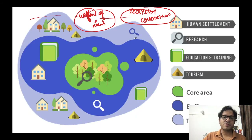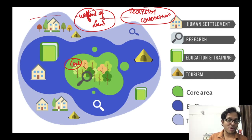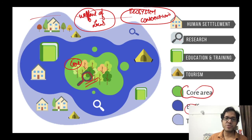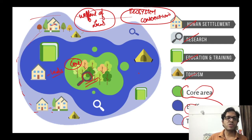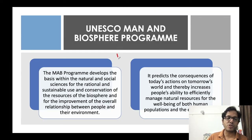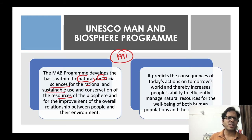Biosphere reserves mein teen areas hote hain. Pehla core area - jahaan pe koi bhi activity prevented hai, only research is allowed. Us ke bahar buffer area hai, jis mein all four activities are allowed: human settlement, research, education and training, and tourism. Human settlement matlab locals ka - local tribes. Aur transitional area mein bahut zyada human settlements hain. Man and Biosphere program 1971, initiated by UNESCO.